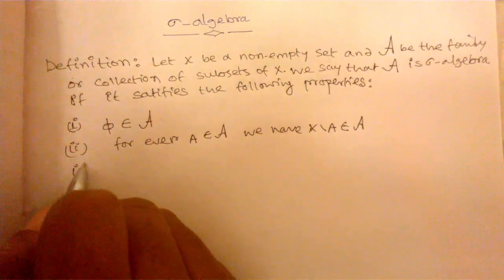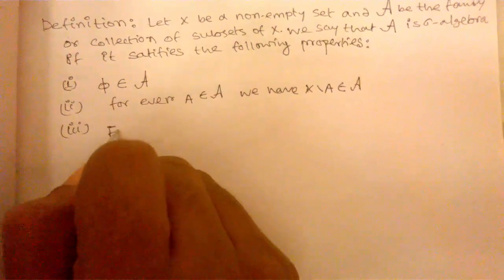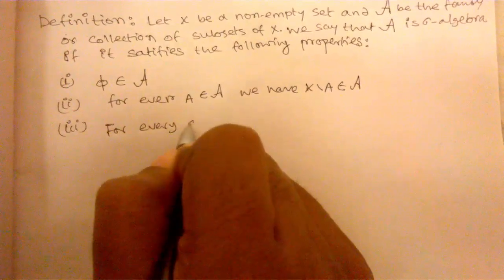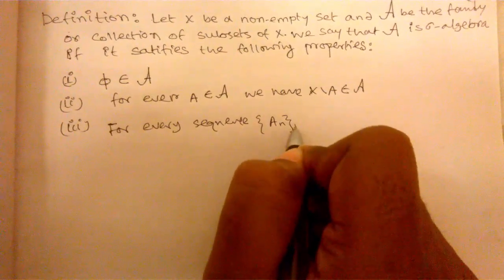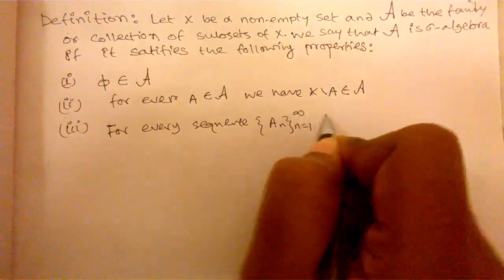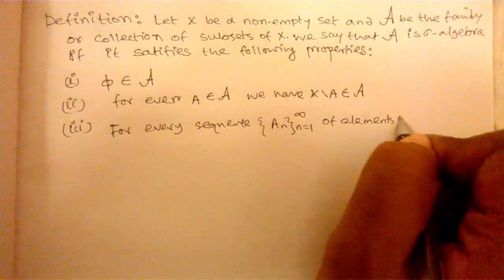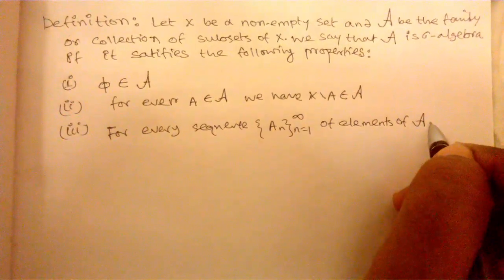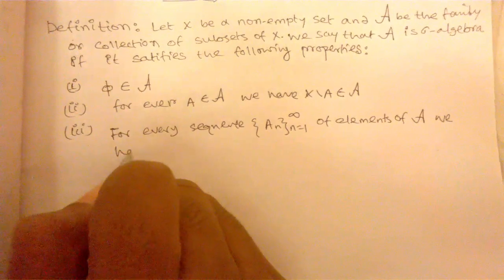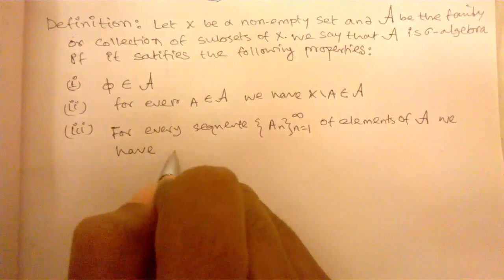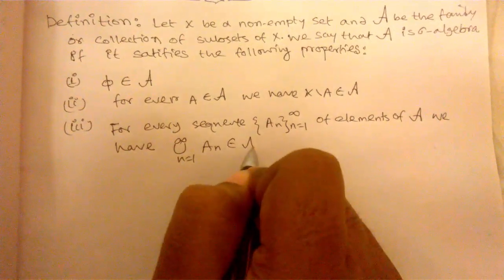Number 3, for every sequence A_n, n equals 1 to infinity of elements of the collection of subsets of X which is A, we have union from n equals 1 to infinity of A_n belongs to A.